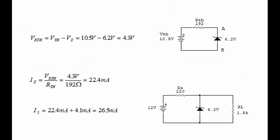We have now simplified the circuit using the Thévenin method. We put the zener diode back in the original place between terminals A and B. We can find the current through the zener diode using methods from the first circuit: starting with the voltage across the Thévenin resistor — 10.5 volts minus 6.2 volts equals 4.3 volts. Then the zener current is 4.3 volts divided by 192 ohms, which equals 22.4 milliamps.